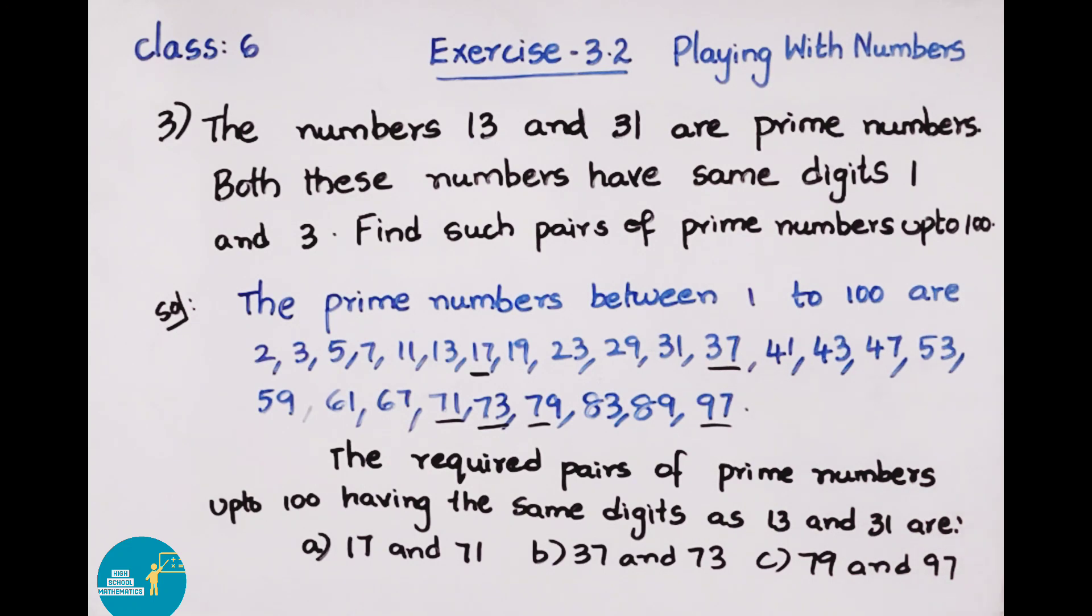Solution: The prime numbers between 1 to 100 are: 2, 3, 5, 7, 11, 13, 17, 19, 23, 29, 31, 37, 41, 43, 47, 53, 59, 61, 67, 71, 73, 79, 83, 89, and 97. Total 25 prime numbers between 1 to 100.